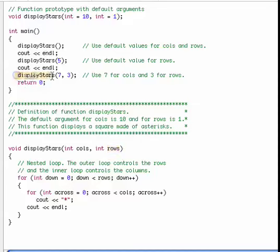Now we have another call, and I have provided in this call two arguments, a 7 and a 3. The 7 goes into columns and the 3 goes into rows. And I'm not going to use any of the default arguments or default parameters.